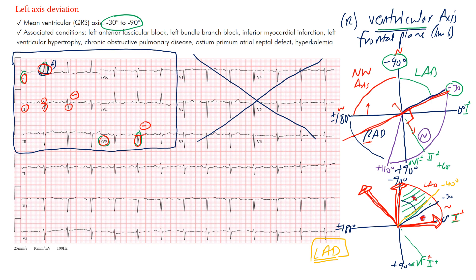The leads to focus on early on are leads I and aVF. When you need to determine where in the upper-left region the axis is, use lead II to differentiate: negative in lead II puts you in left axis deviation, positive puts you in normal range. Normal axis in adults is between negative 30 and positive 110 degrees — and that's what we use here at Mayo Clinic.